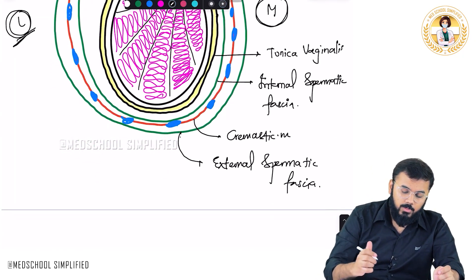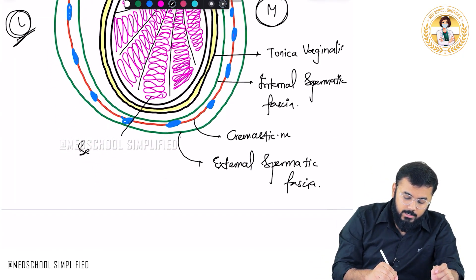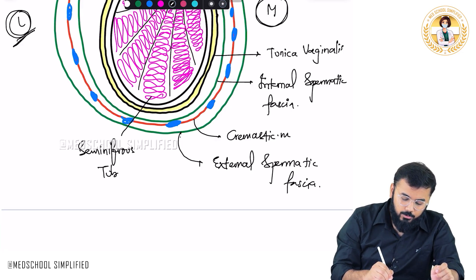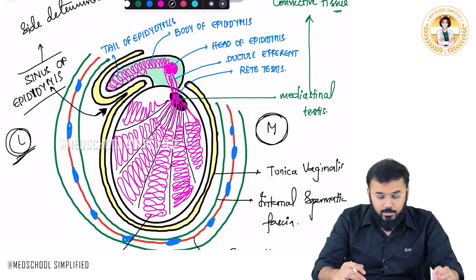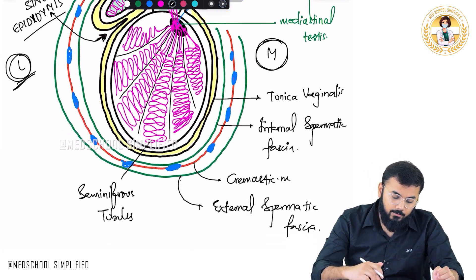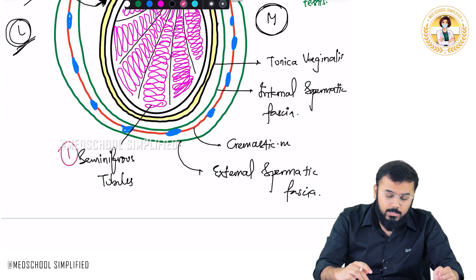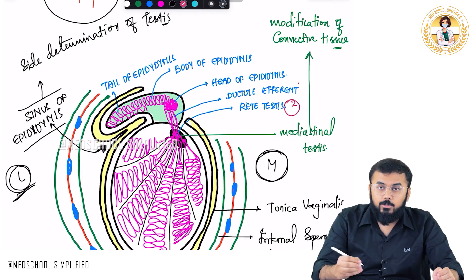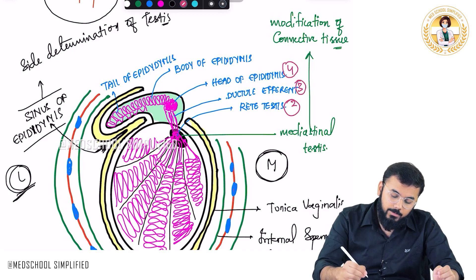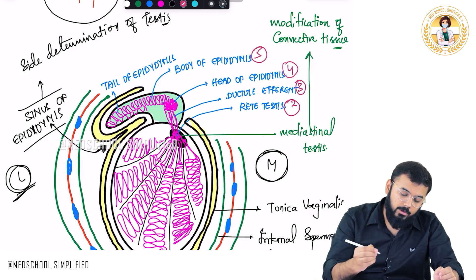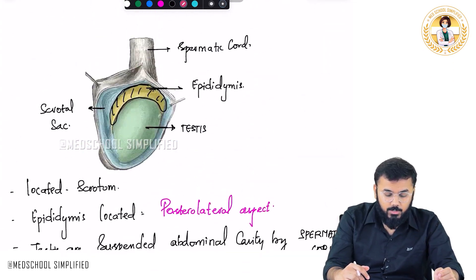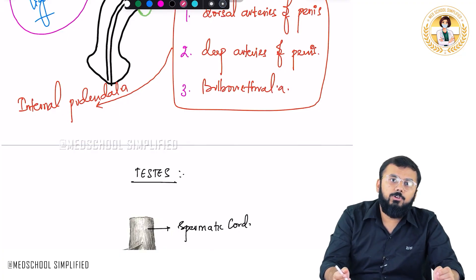Overall, the things you need to know: seminiferous tubules join together to form the rete testis, from there the ductuli efferentes arise, and from there the head of epididymis, then the body, and finally the tail of epididymis. These are the structures regarding the testis. Thank you so much for watching. Goodbye.